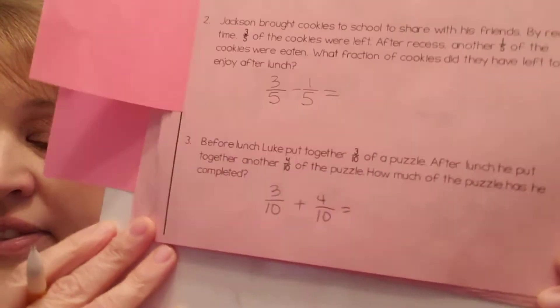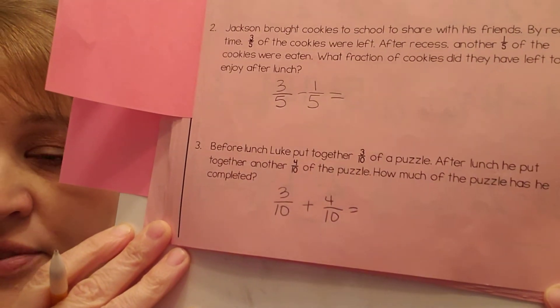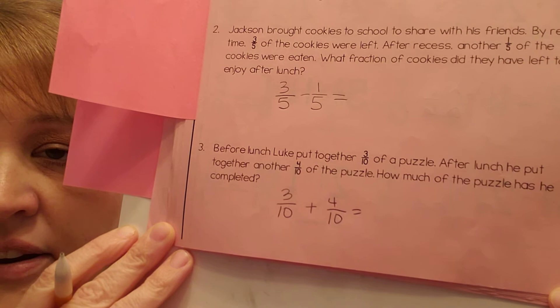All right. Number 3. Before lunch, Luke put together 3 5ths of a puzzle. After lunch, he put together another 4 5ths of the puzzle. How much of the puzzle has he completed? So we're adding what he did the first time and what he's doing the next time. And we're going to add those together. All right. You can do that. Easy peasy lemon squeezy on NF3.